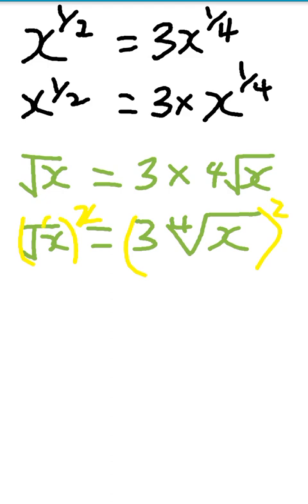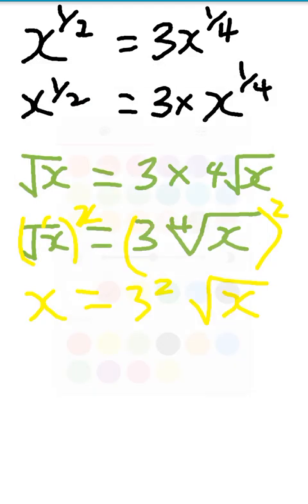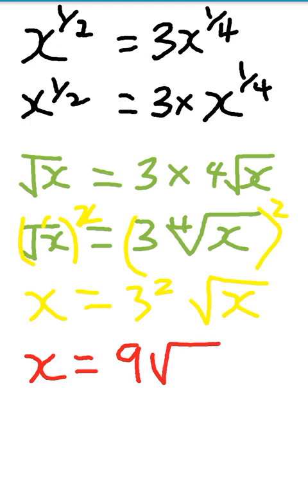When we square both sides, the square cancels out the square root on the left, leaving us with just x. On the right-hand side, the square also affects the 3, and it cancels one square from the fourth root, leaving us with the square root. So we now have x equal to 3 squared times the square root of x, and 3 squared is 9, giving us x equal to 9 times the square root of x.